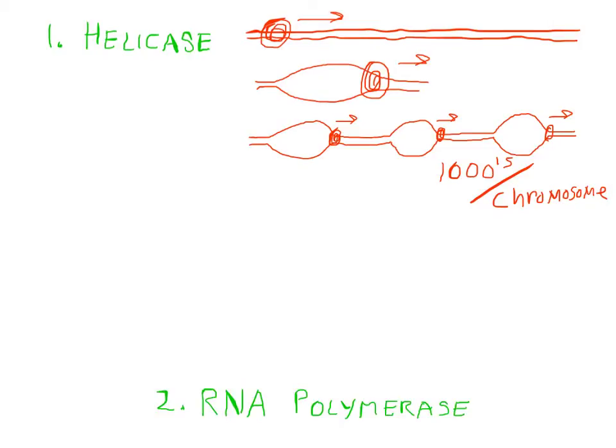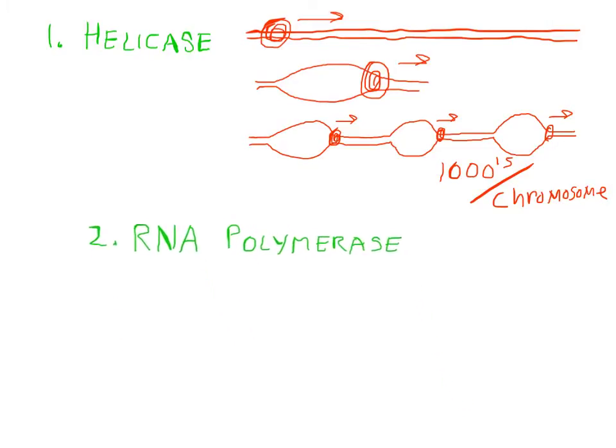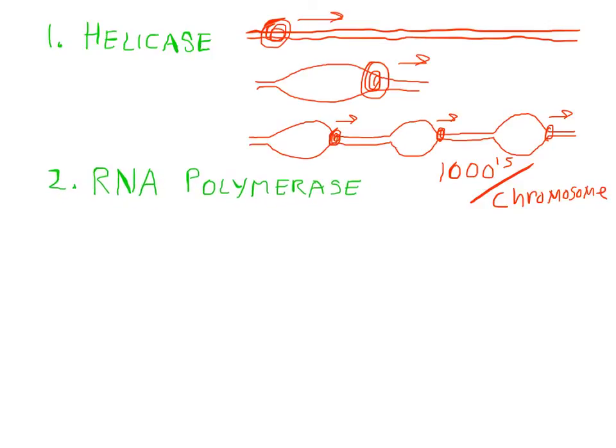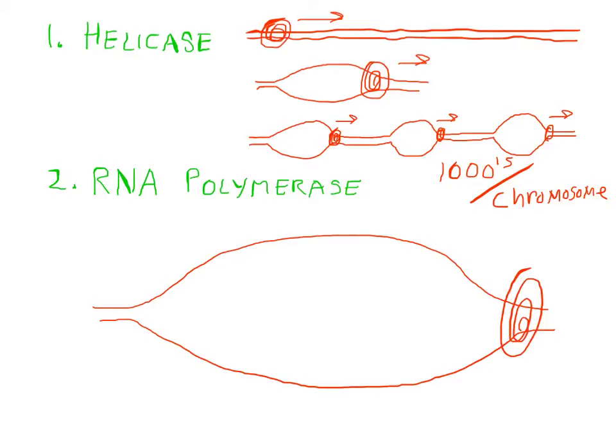The second enzyme is called RNA polymerase. To explain this, we're going to magnify one of these unzipped sections of our DNA. Here is the unzipped part. The helicase molecule is traveling in this direction.